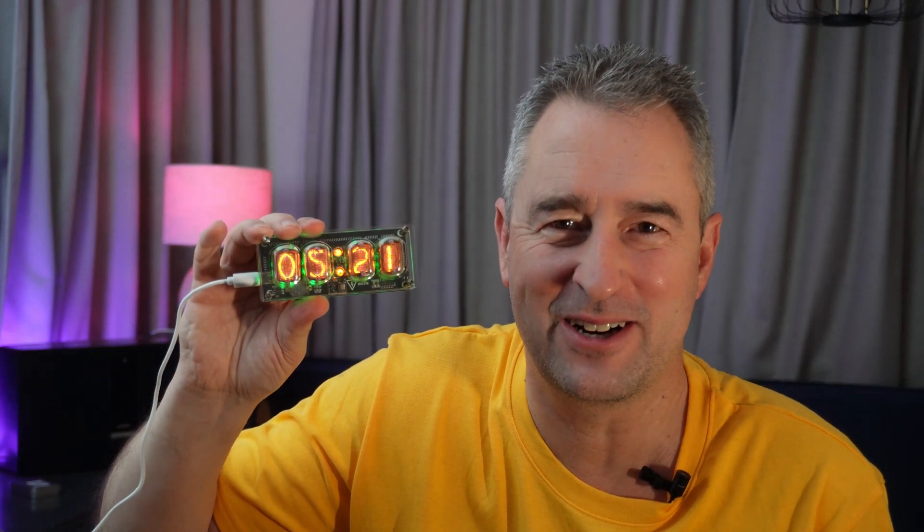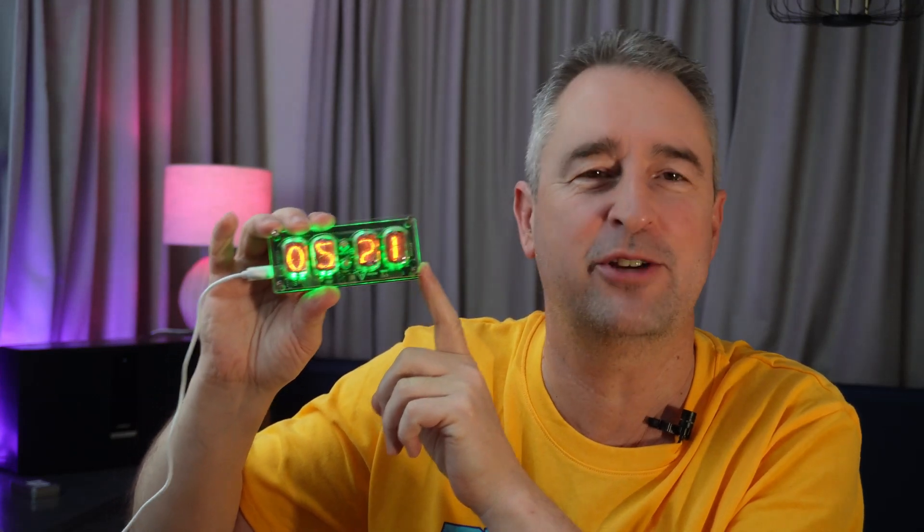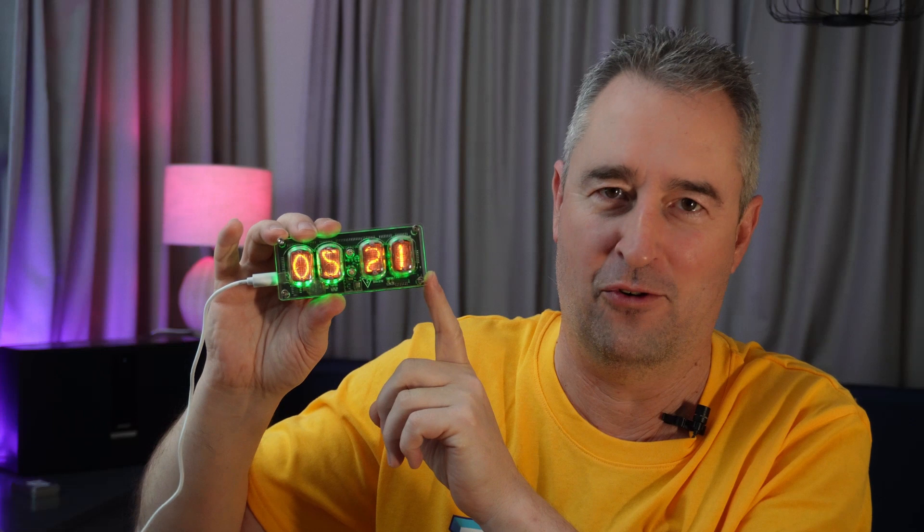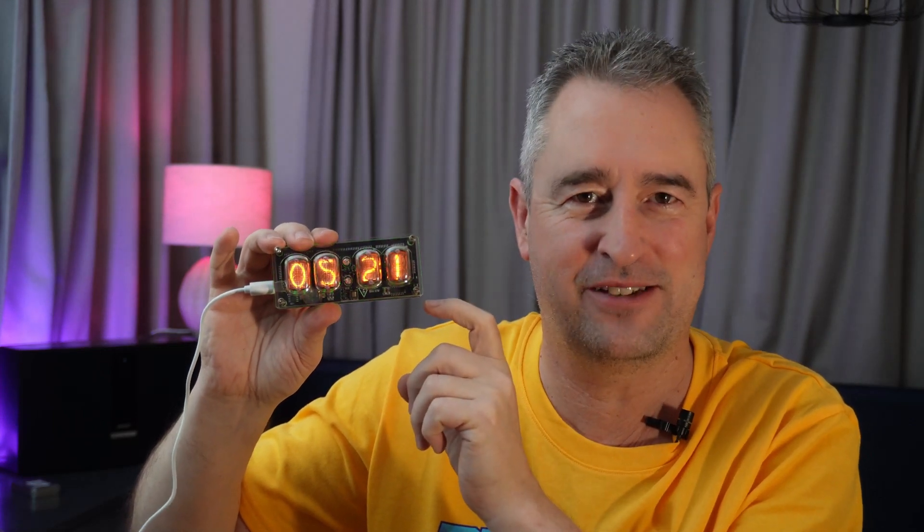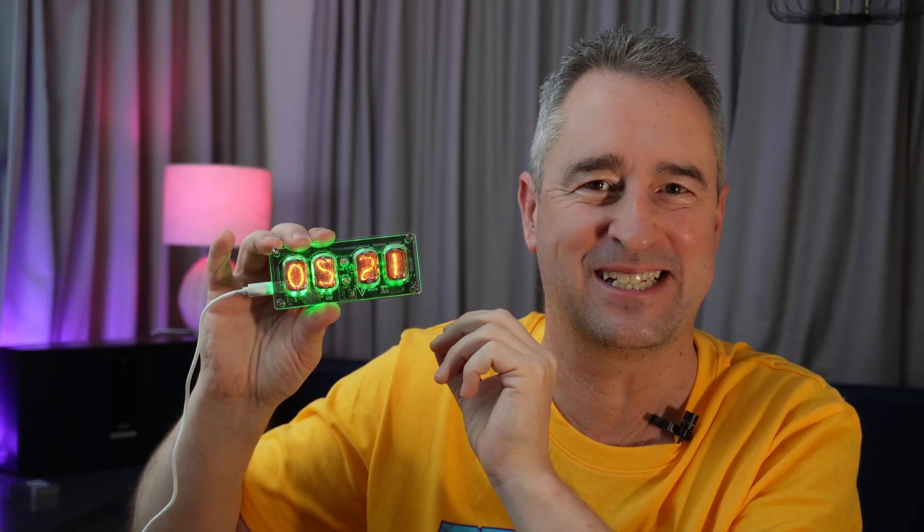Today we're going to have a look at a Nixie clock. This is a super cool little device that runs off Nixie tubes, which were display tubes used back in the 70s before LEDs. Let's have a look at this device and see if we can control it in any way using Home Assistant.